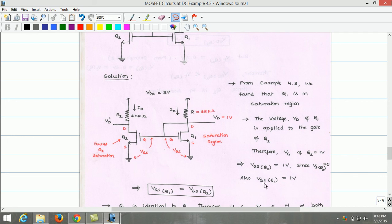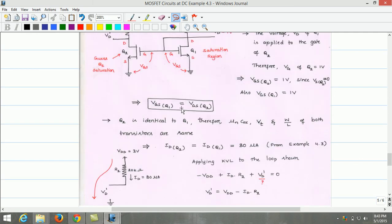Also, Vgs of Q2 is equal to Vgs of Q1, since both transistors are identical. Therefore, Vgs of Q1 equals Vgs of Q2. As per given data, Q2 is identical to Q1.